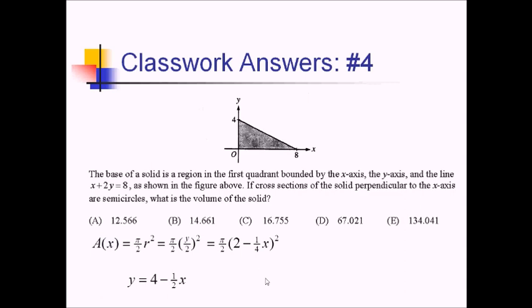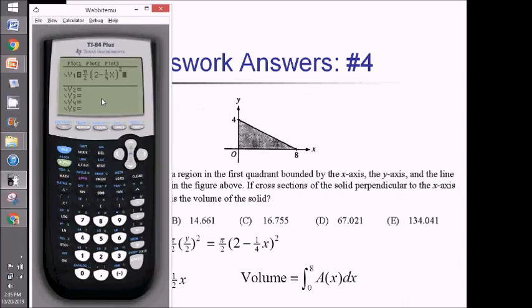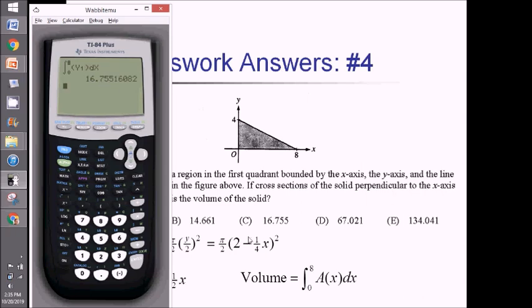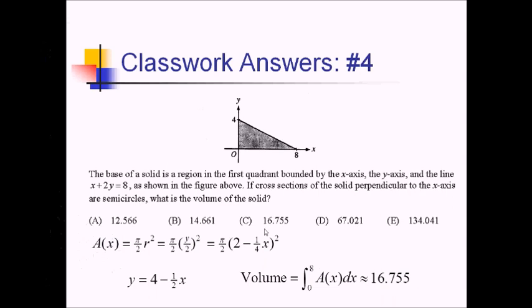On the calculator, my volume is going to be the integral from 0 to 8 — we're going all the way across. I'm going to put this area formula inside my y equals as y1. Then quitting out, I'll do math 9 to integrate, going from 0 to 8, alpha trace y1 for my integrand, and then dx. That comes out to 16.755, which is answer choice C.